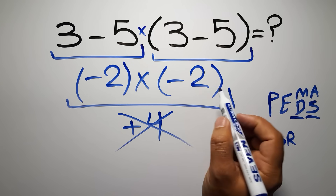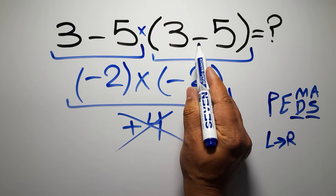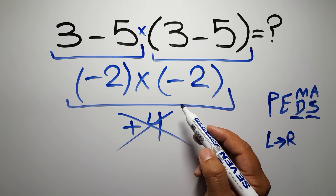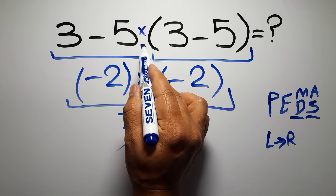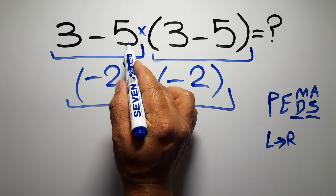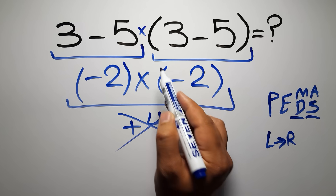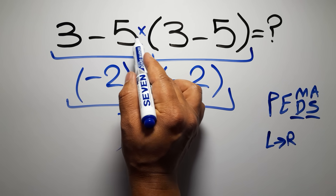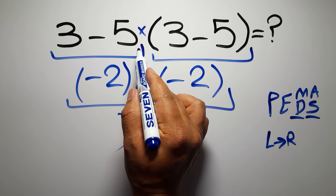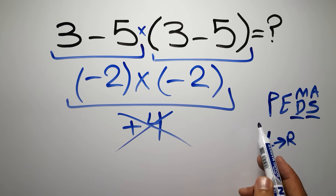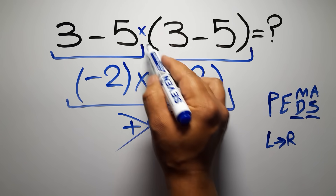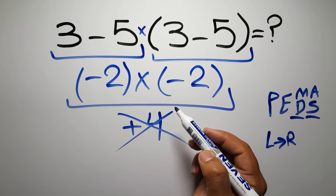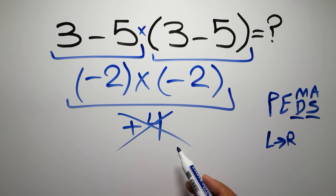In this expression we have one subtraction, one multiplication, and one parentheses. Inside this parentheses we have one subtraction. We have a multiplication here because in mathematics, when a number is placed next to parentheses it means multiplication — we usually don't write the multiplication sign for brevity. So according to PEMDAS, first we do the parentheses, then the multiplication, and finally the subtraction.